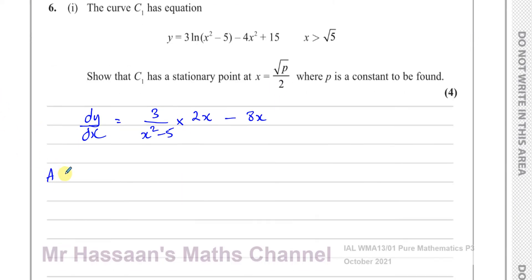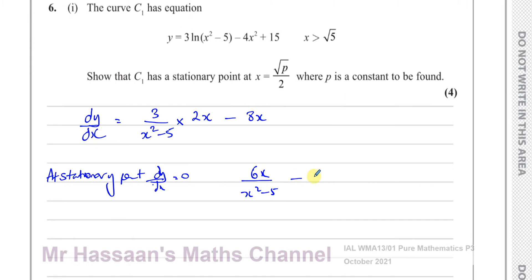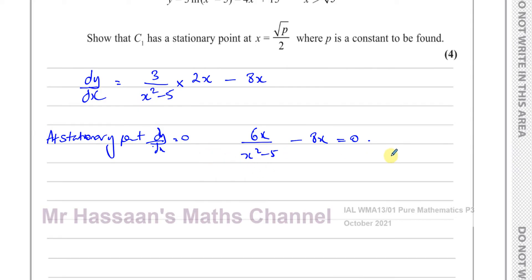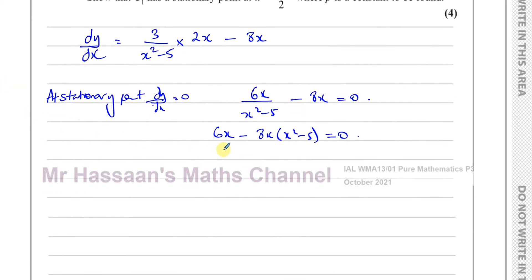At a stationary point we know the gradient is 0, so dy/dx equals 0. That gives us 6x over (x squared minus 5) minus 8x equals 0. To solve this I multiply both sides by (x squared minus 5), giving 6x minus 8x(x squared minus 5) equals 0. Expanding that: 6x minus 8x cubed plus 40x equals 0.